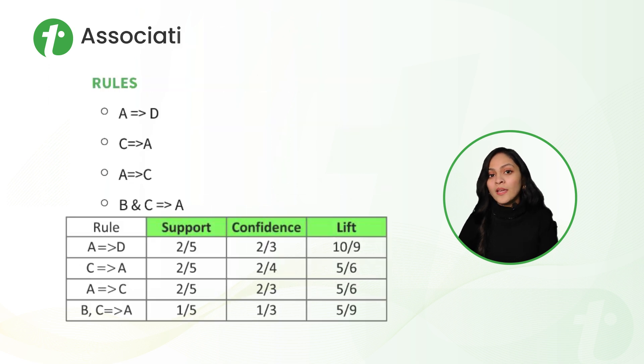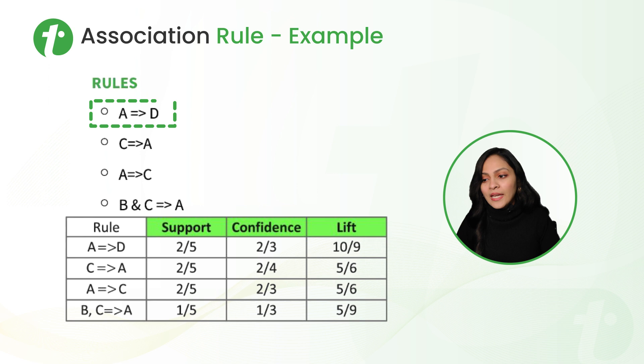After that, what we generally do is we make rules. Let's say we have these rules here: A arrow D, C arrow A, A arrow C, B and C arrow A. What that means is if you buy A, there is possibility that you will buy D as well. If you buy C, there is possibility that you will buy A as well. If you buy A, then there is possibility that you will buy C as well. And at the end, if you buy B and C, then there is possibility that you will buy A as well. So using these rules, we will calculate the support, confidence and lift values. And you can see here also that in this table, we have rule and support, confidence and lift values.